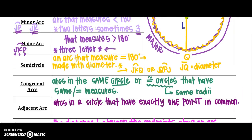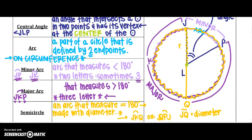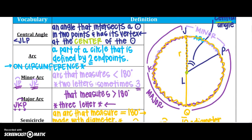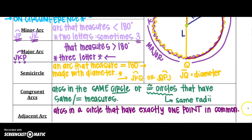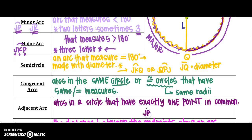Adjacent arcs are arcs in the circle that have exactly one point in common. Going back to our picture, I could say that arc JP and arc PQ are adjacent because they share that point — arc JP is adjacent to arc PQ.